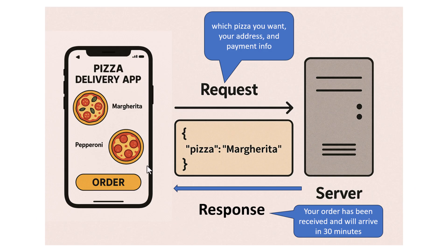Let us go back to the pizza ordering example. You open a pizza delivery app on your phone, you see a menu of pizzas, and you choose the pepperoni pizza. When you tap the order button, the app sends a request to the restaurant server through a REST API. That request might include details like which pizza you want, your address, and the payment information.